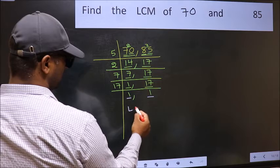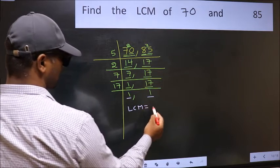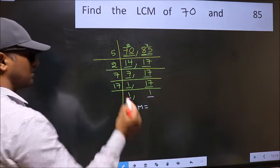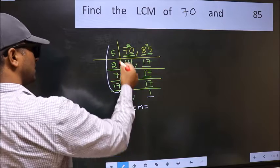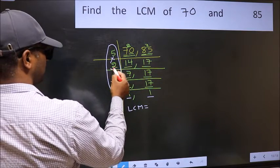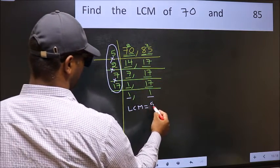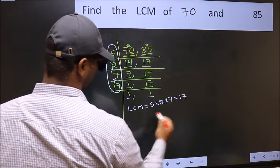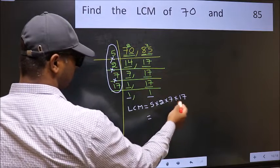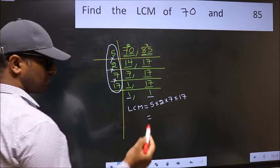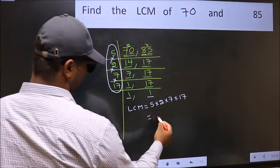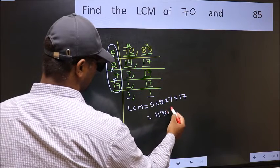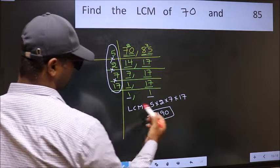So our LCM is the product of these numbers: 5 into 2 into 7 into 17. When we multiply these numbers, we get 1190 as our LCM.